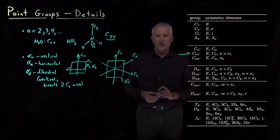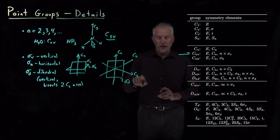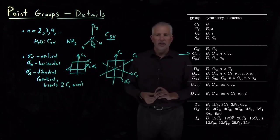If it doesn't bisect two C2 axes, if either these C2 axes aren't there or if it lies along one of the C2 axes rather than bisecting it, then we would just call it an ordinary sigma V vertical reflection plane.